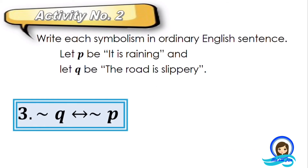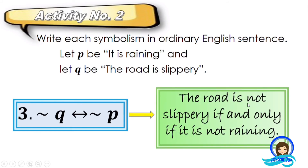What about the third example? We have the negation of Q and the biconditional symbol, then the negation of P. In ordinary English sentence, it is: the road is not slippery — this is the negation of Q — if and only if — this is the biconditional symbol — it is not raining, which is the negation of P. So: the road is not slippery if and only if it is not raining.